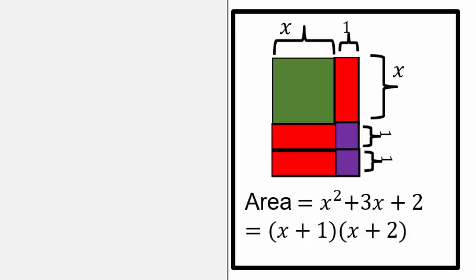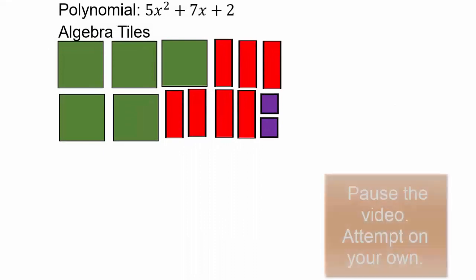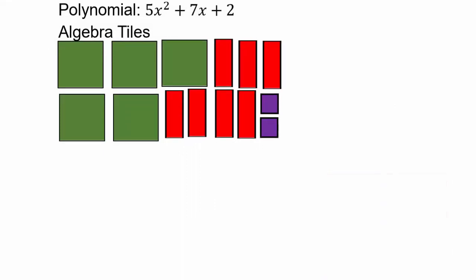And then we'll talk about what is happening algebraically. Let's go back to our original problem. Pause the video and see which way you can combine these pieces together. You can use algebra tiles online, make the pieces yourself, or just draw it out. Remember: the vertical red rectangles can only go either under or to the side, because the side x needs to match up with the side x of the square, and the side 1 of the little square has to match up with the side 1 of the red rectangles.